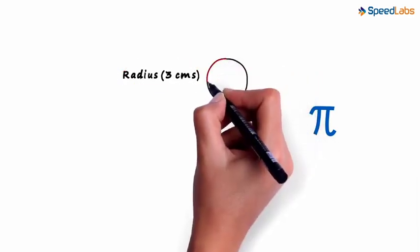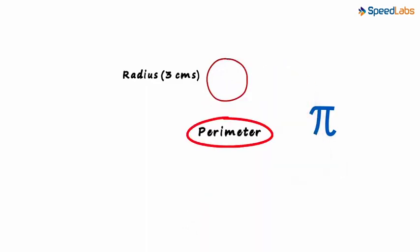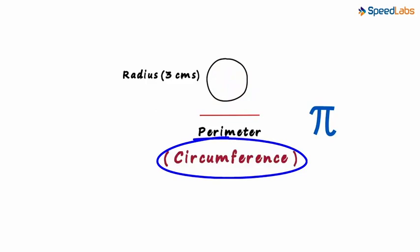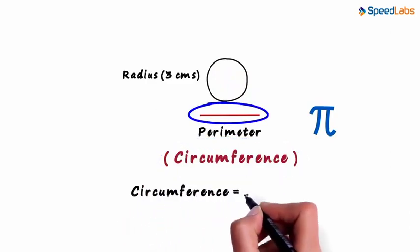The length of this red thing will be the perimeter. And we have a special name for the perimeter of a circle. It's called the circumference. This length will be the circumference. This length will measure 18.85 centimeters.